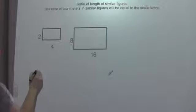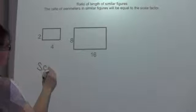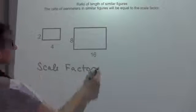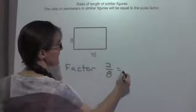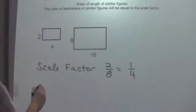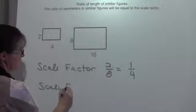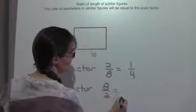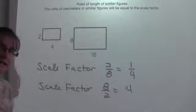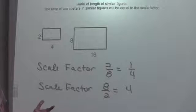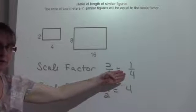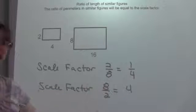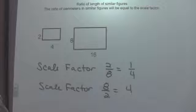If I go from little to big for the scale factor, I put the 2 over the 8, and I get a scale factor of 1/4. If I set it up differently and go from 8 to 2, then I get a scale factor of 4. The difference is one's a reduction and one's an enlargement. If I do 1/4, I will be reducing my figure. If I do 4, I will be enlarging my figure. It just depends on what they're asking for.